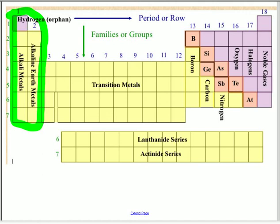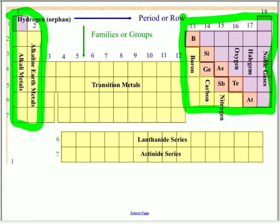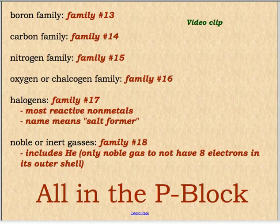The next groups we're going to look at are in the P block, which is over here on the right side of the periodic table. The S's and P's will make more sense when we get to electrons. So we have the boron family, which is number 13; the carbon family, which is 14; the nitrogen family, which is 15; and then it's either called the oxygen or chalcogen group — it doesn't matter which one you call it — and they're number 16. These families don't have as many clear trends because they contain metals, non-metals, and metalloids, so they're pretty variable.